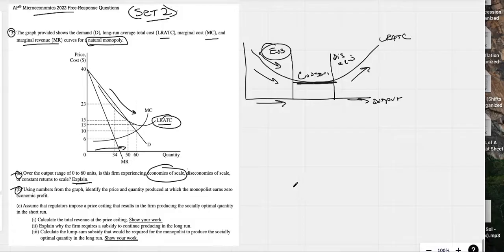Part B: Using the numbers from the graph, identify the price and quantity produced at which the monopolist earns zero economic profit. You need to know that zero economic profit is the same thing as where price equals ATC. It can also be called long run equilibrium. It's also called break even.